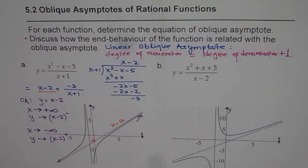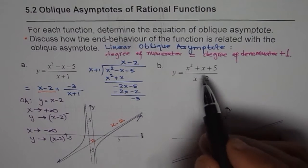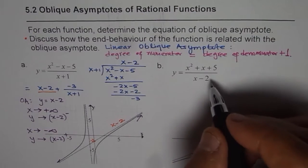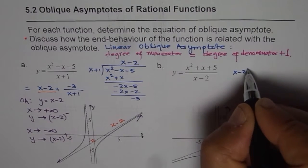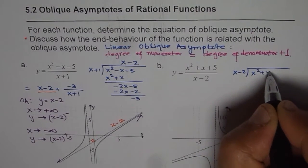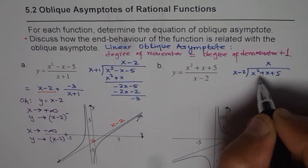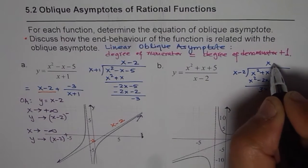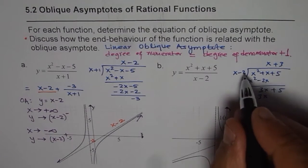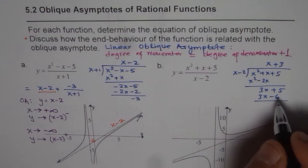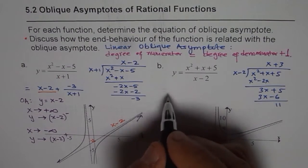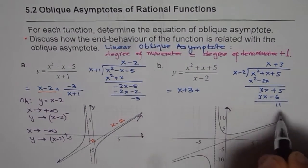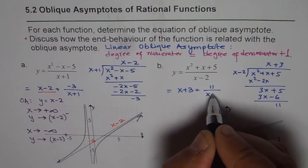Let's do one more example. This time we divide x² + x + 5 by x - 2. It goes x times, giving x² - 2x; taking away we get 3x + 5. Then plus 3 gives 3x - 6, and taking away we get a remainder of 11. So we can write this function as x + 3 plus 11 over (x - 2).